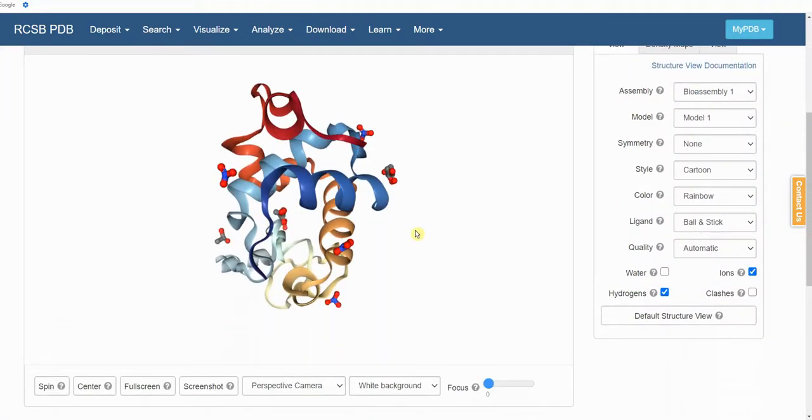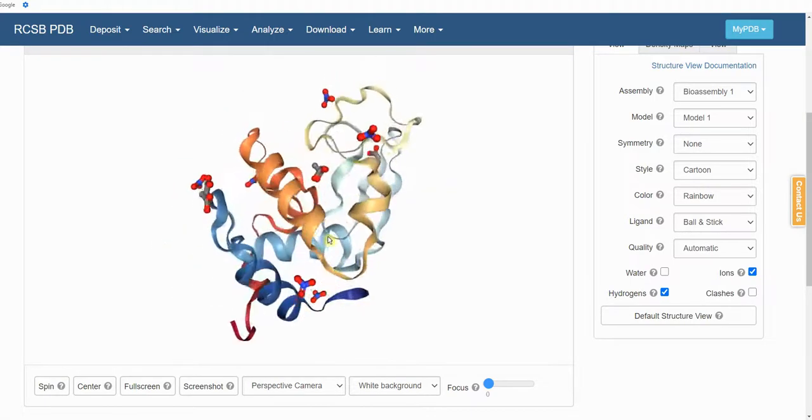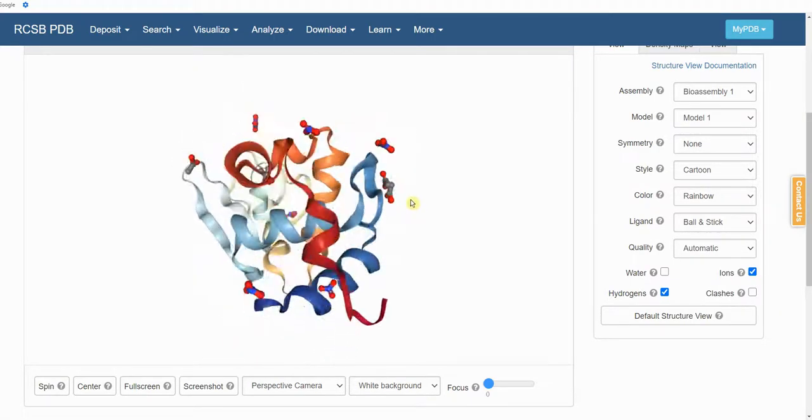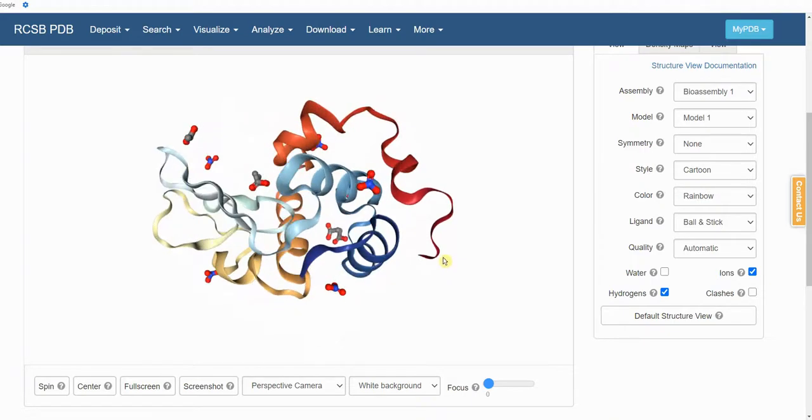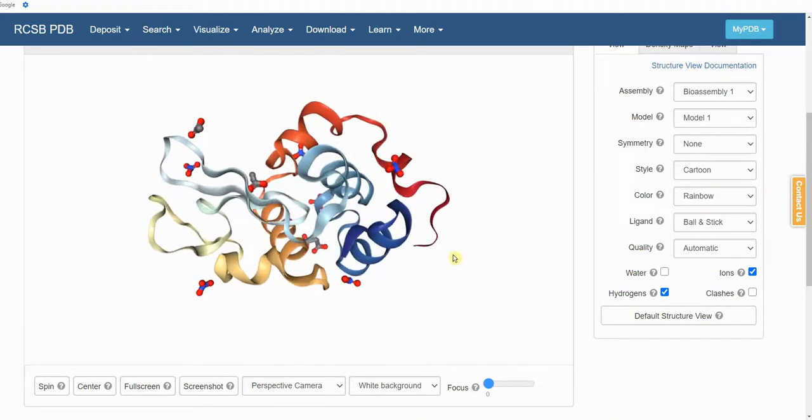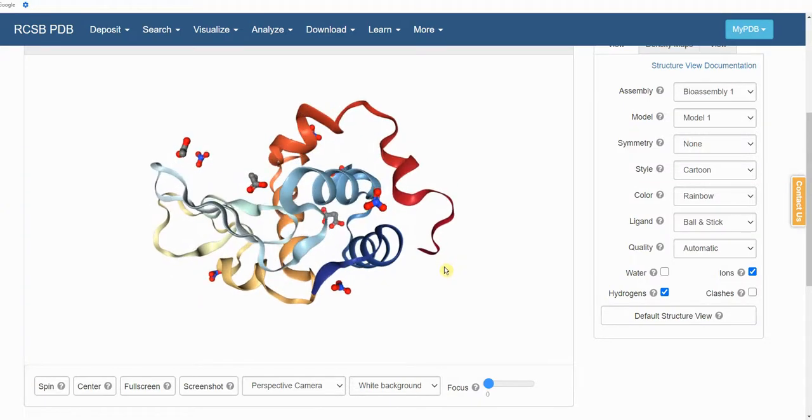And here we are. Here is our protein. This is called a ribbon or cartoon diagram of the protein. The view highlights the overall shape of the protein, just by showing the backbone of the protein chain. If you hover your cursor over parts of the backbone, it will tell you exactly which amino acid is in that part of the backbone.